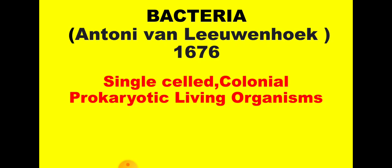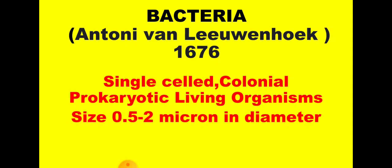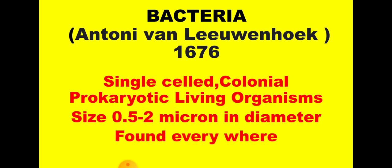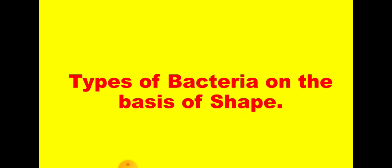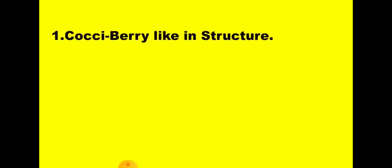Prokaryotic means bacteria are those living organisms having no complete nucleus in their cells. Bacterial size is 0.5 to 2 microns in diameter, and bacteria are found everywhere. There are different types of bacteria on the basis of shape.